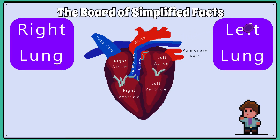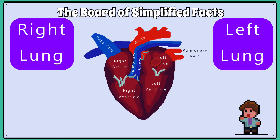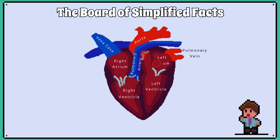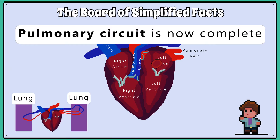Once the red blood cell has picked up some more oxygen, it returns to the left side of the heart via the pulmonary vein. Remember that all veins take blood back to the heart, and again this has nothing to do with whether it is deoxygenated or not. The pulmonary vein takes blood into the left atrium. The pulmonary circuit is now complete.